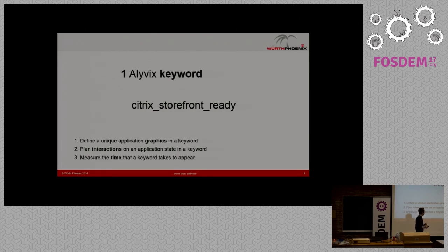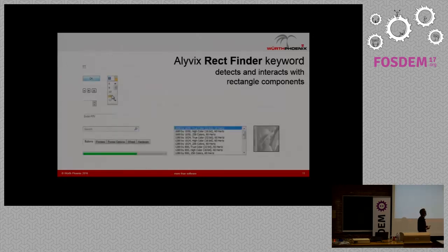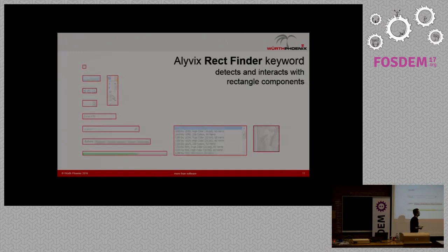You define graphics on those transactions, plan interaction with them, and finally measure the time each keyword takes to appear on screen. We have several tools — for example the image finder, which can detect images of any size, and the rectangular finder, which can detect rectangles on your GUI like buttons, edit boxes, and windows.